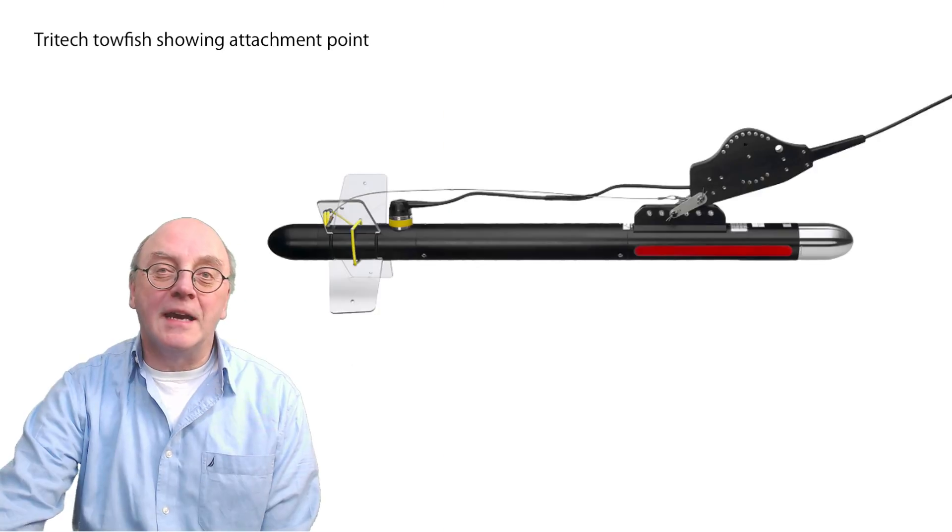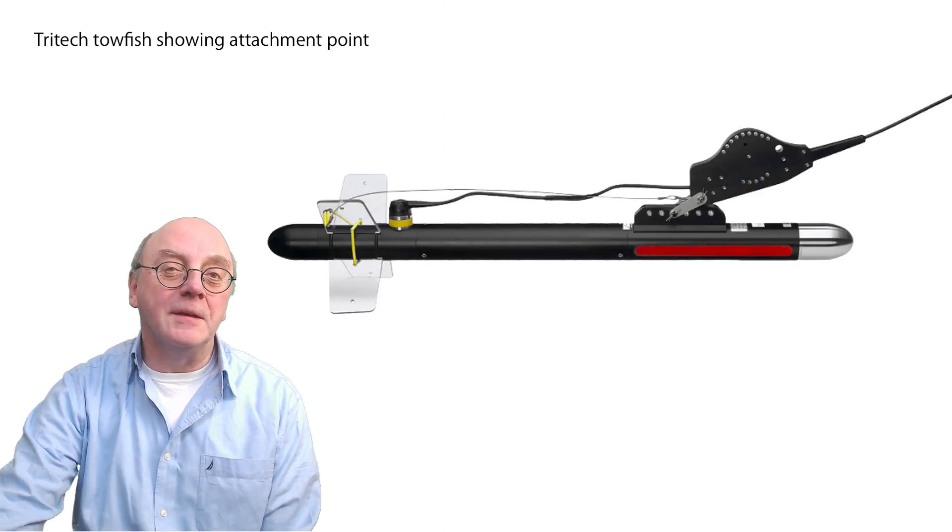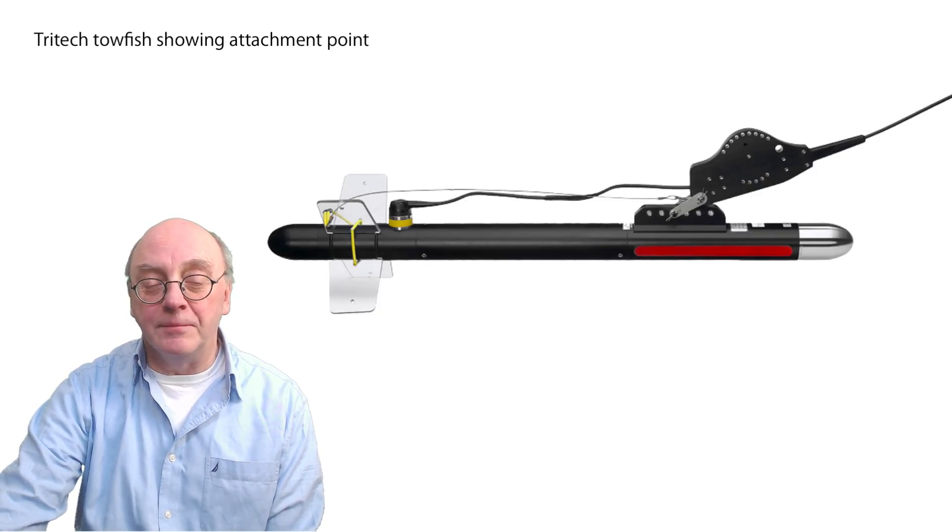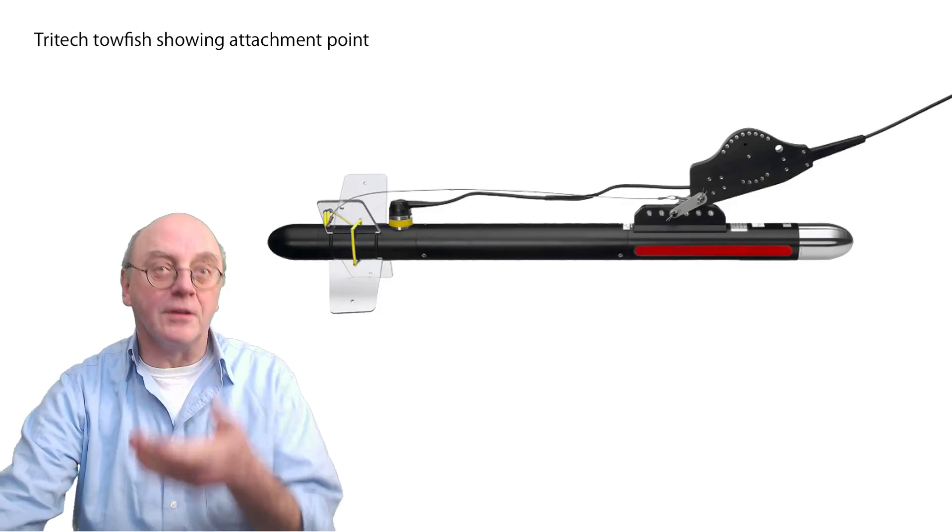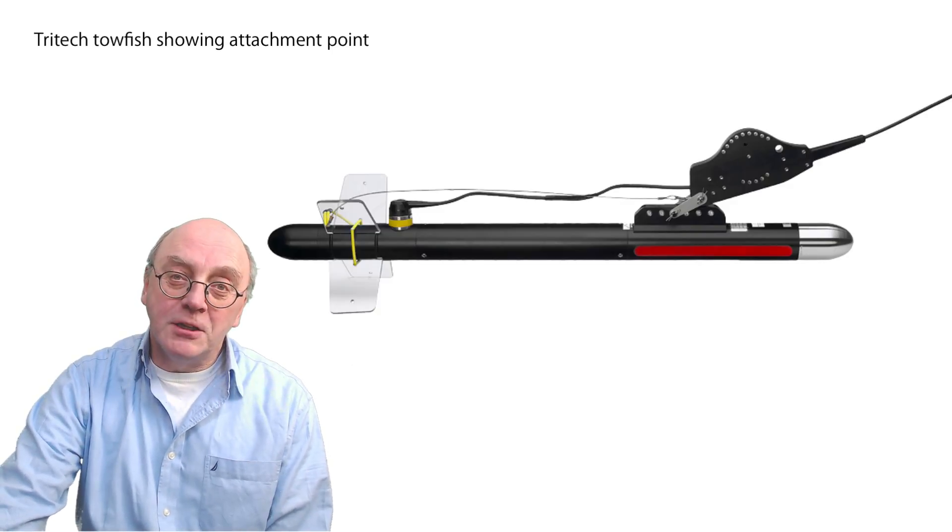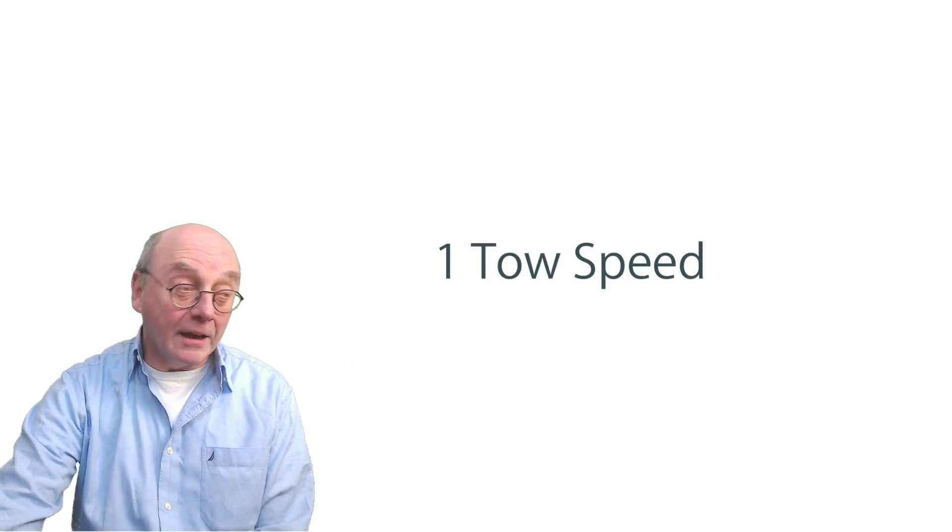Tow fish normally connect halfway along the body, near its centre of gravity. If they're connected to the nose, it would actually pull the front up. In operation, a towing body has two main variables: its tow speed and the length of the cable.